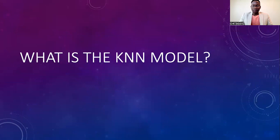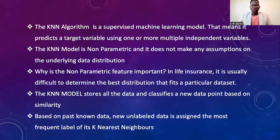So what is the KNN module? The KNN algorithm is a supervised machine learning module, which means it predicts a target variable using one or more independent variables. The KNN module is nonparametric in nature and does not make any assumptions on the underlying data distribution. This is important because in insurance, it is usually difficult to determine the best distribution that fits a particular dataset. The KNN module stores all the data and classifies a new data point based on similarity.